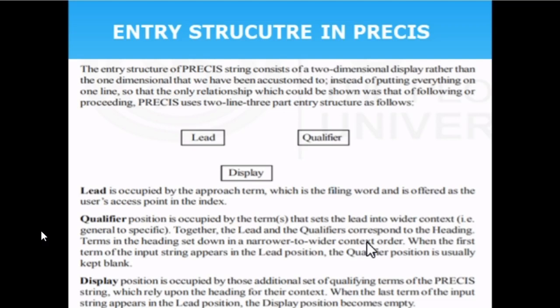The display is the position occupied by the additional set of terms. After the lead, the qualifier is next in line for the next lead position. Like a captain and vice-captain: if the captain moves, the vice-captain steps up. Similarly, the qualifier becomes the next lead, and additional display terms follow behind.